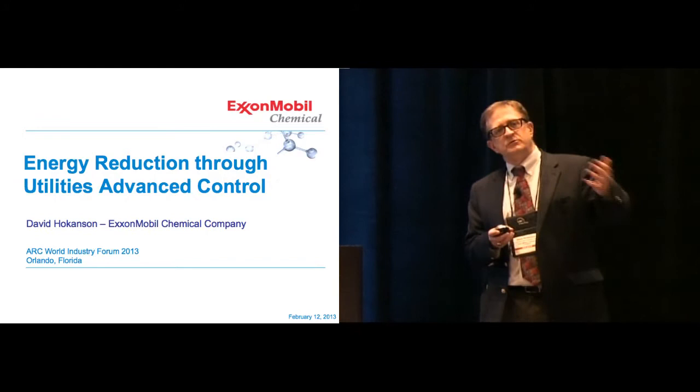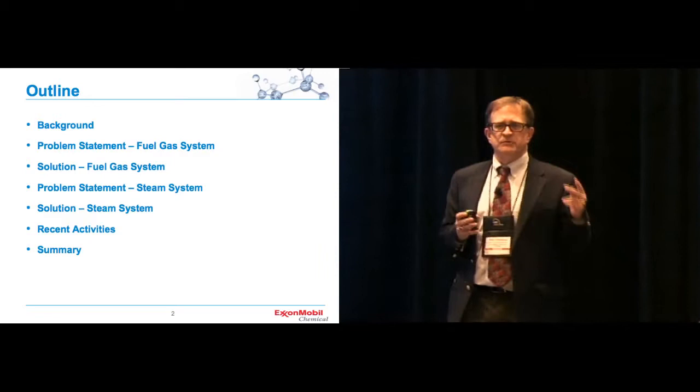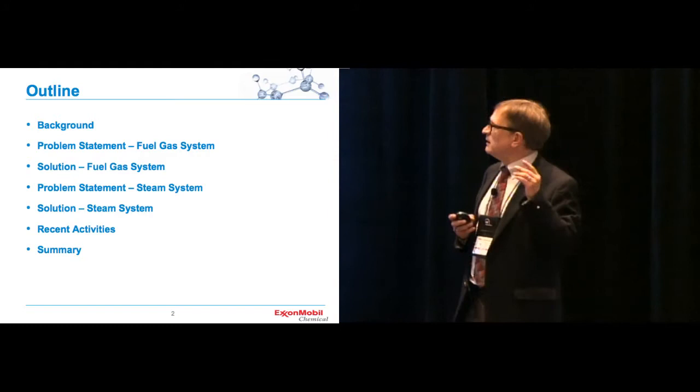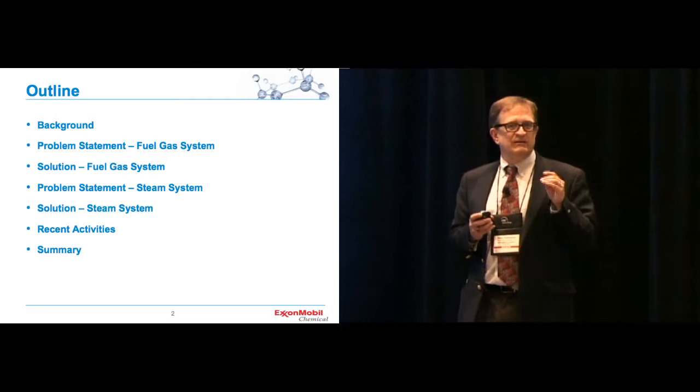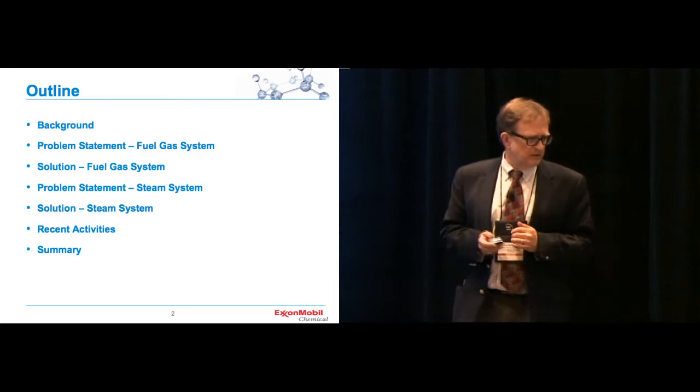And you'll see the couple examples I'll go through, and then we'll talk about what we've done in the future. So let me start by giving you, this is the outline of the talk. Basically, we're going through the background. We'll give you two examples. A fuel gas system that had a lot of problems in overall control, and then a steam system where there was a potential for optimization and maximizing the use of very efficient energy production and steam production. And then we'll just talk about some recent activities, and we'll give you a quick summary.